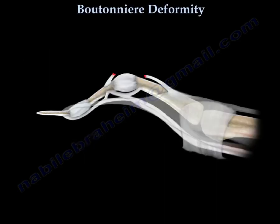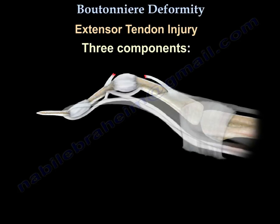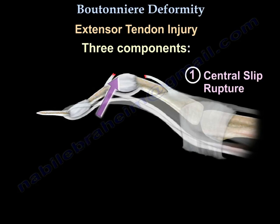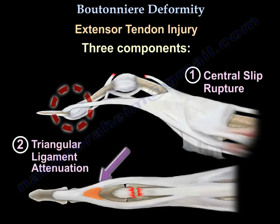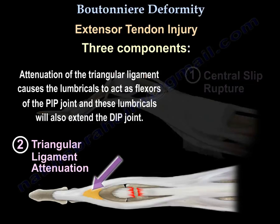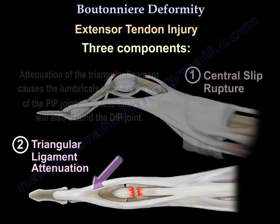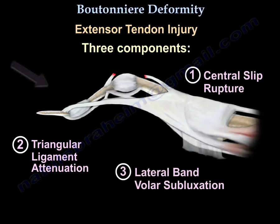Boutonniere deformity is an extensor tendon injury with three components: a central slip rupture, triangular ligament attenuation, and lateral band volar subluxation. Attenuation of the triangular ligament causes the lumbricals to act as flexors of the PIP joint. These lumbricals will also extend the DIP joint.